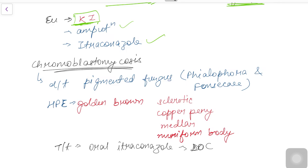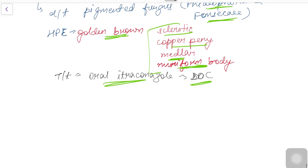Chromoblastomycosis occurs due to pigmented fungi — either Phialophora species or Fonsecaea species. The characteristic histological finding is golden-brown sclerotic bodies, also known as copper penny bodies, Medlar bodies, or muriform bodies — all referring to the same structure. The drug of choice is oral itraconazole.